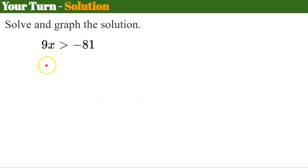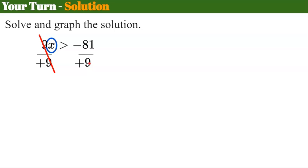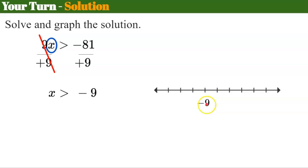Welcome back. x is being multiplied by 9, so the inverse is to divide both sides by 9 — noting we're dividing by a positive value. 9 divided by 9 leaves x, and -81 divided by 9 is -9, giving x > -9. On the number line, place -9 with an open circle, since it's not equal to, and shade all values to the right.